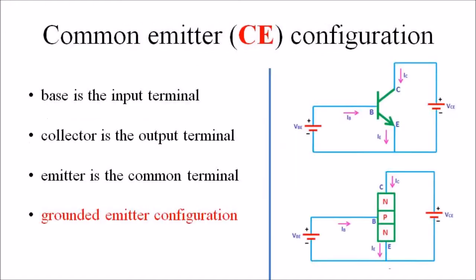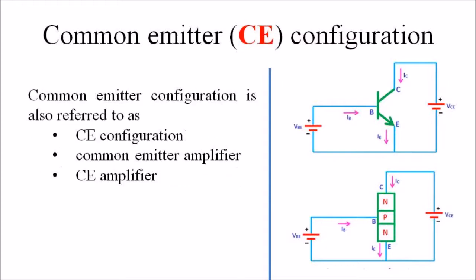In common emitter configuration, the base terminal is the input terminal, the collector is the output terminal, and the emitter is the common terminal for both input and output. The base terminal and emitter terminal are the input terminals, whereas the collector terminal and emitter terminal are the output terminals. The emitter terminal is grounded, so CE configuration is also known as grounded emitter configuration. It is also referred to as CE amplifier or common emitter amplifier.